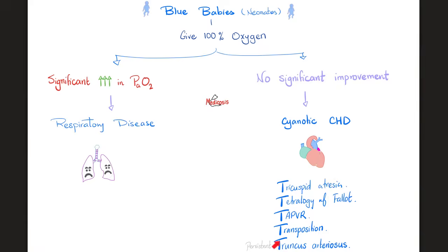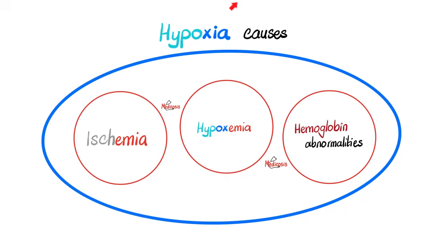What are these cyanotic congenital heart diseases? Tricuspid atresia, tetralogy of Fallot, TAPVR, transposition, and truncus. Causes of hypoxia include ischemia, hypoxemia, and hemoglobin abnormalities.